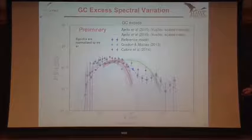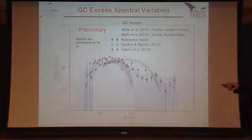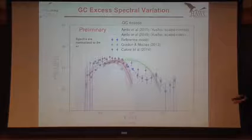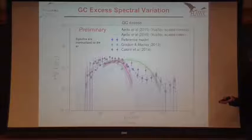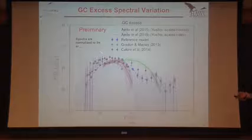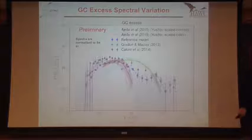We wiggled all these knobs — the shading shows how the spectrum varied. We were trying to see if we could turn the knobs enough to completely get rid of this excess. The answer is no — we could never get rid of the excess, which is super interesting. However, the spectrum varied quite a bit. People have tried to use spectral arguments to distinguish dark matter from astrophysics, but our point in this paper is that the uncertainties are really large right now. We really need to beat down these uncertainties before we can make spectral arguments to distinguish.